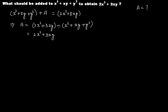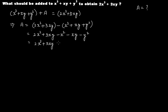Now open the brackets: 2x squared plus 3xy, and outside the bracket is minus with a plus sign inside, so this becomes minus x squared, minus xy, minus y squared. Let's rewrite this as 2x squared plus 3xy, and put all the negative terms together: minus x squared plus minus xy plus minus y squared.